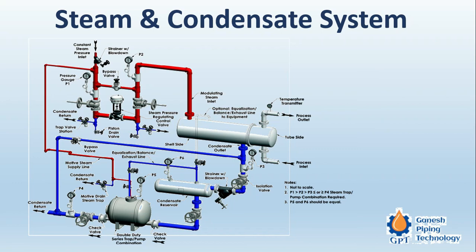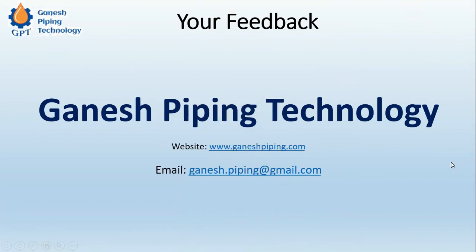A steam line always involves two systems: the steam system and the condensate system. Condensate is not desired, but because heat always flows from a body at higher temperature to one at lower temperature, there is always heat loss in the system despite insulation. This causes condensate to form, making condensate removal a very important activity. For this purpose there is a separate condensate system.